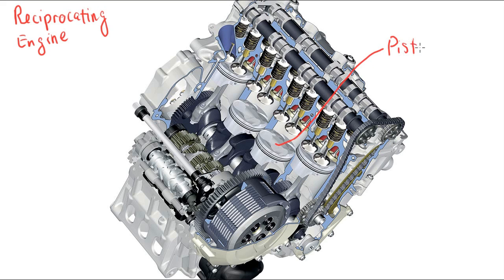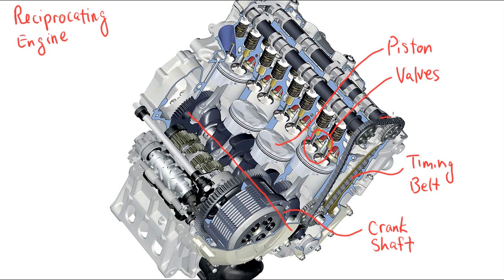So here we have a piston inside a cylinder, and there are several valves for each cylinder that control the inflow and outflow. Here's the crankshaft, which the pistons are connected to by connecting rods, which turns for power. The timing belt connects the crankshaft to the camshafts, which then control the valve timing.